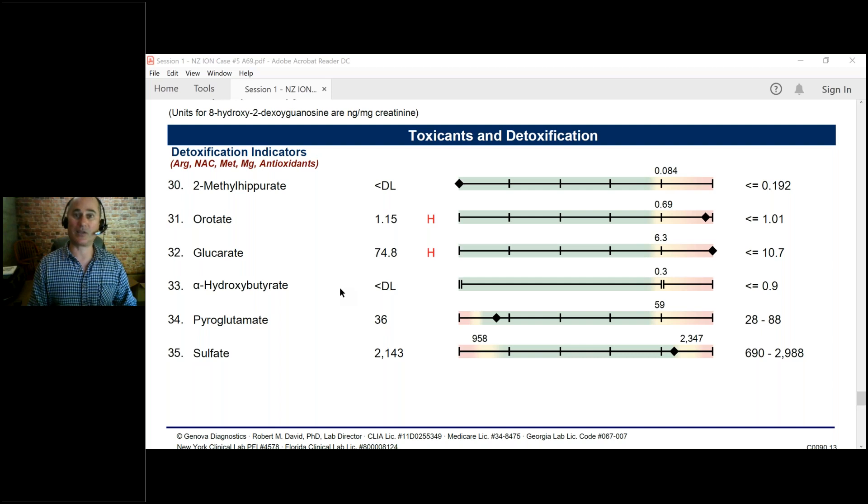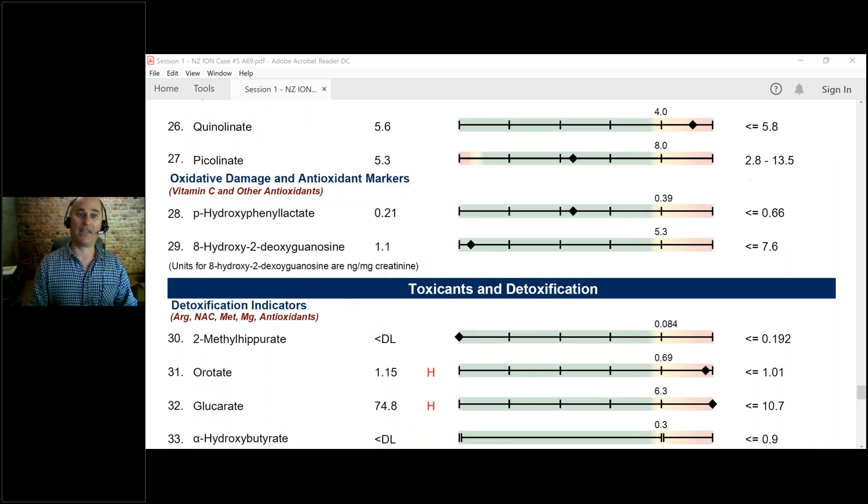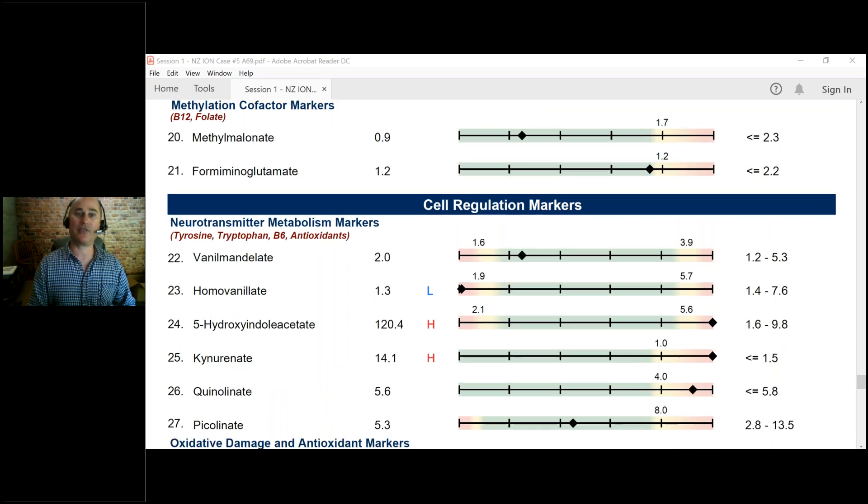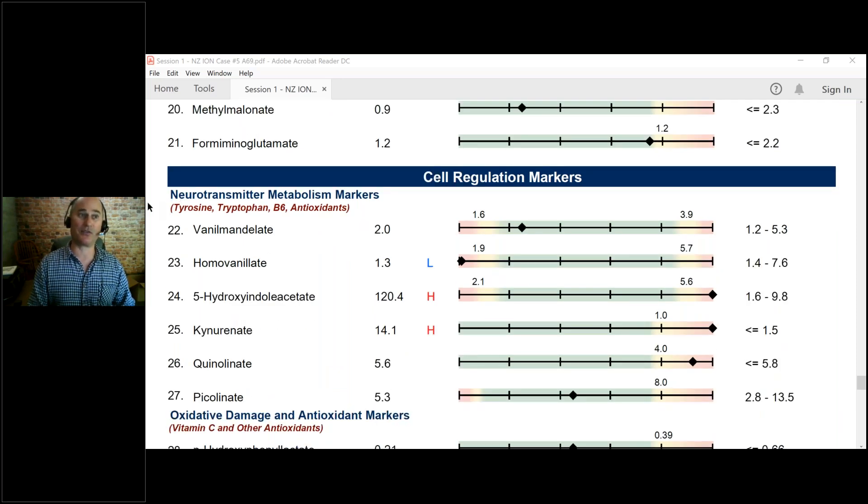I'm going to skip around a little bit, from section to section. The next section that I feel is key are the cell regulation markers, which have to do with your brain. Again, we often see problems like low homovanylate, which means low dopamine.